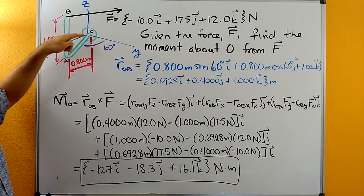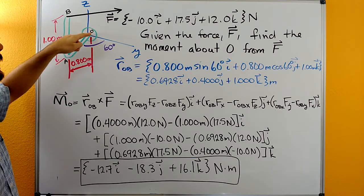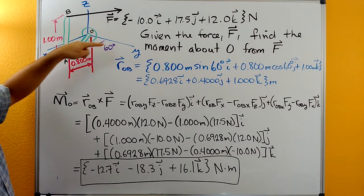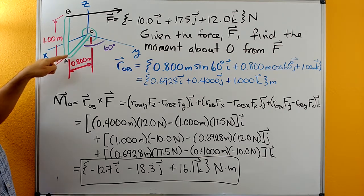In this system we have a bent pipe that's fixed here at O. The pipe comes out here in the x-y plane at 60 degrees from the y-axis, 0.8 meters.